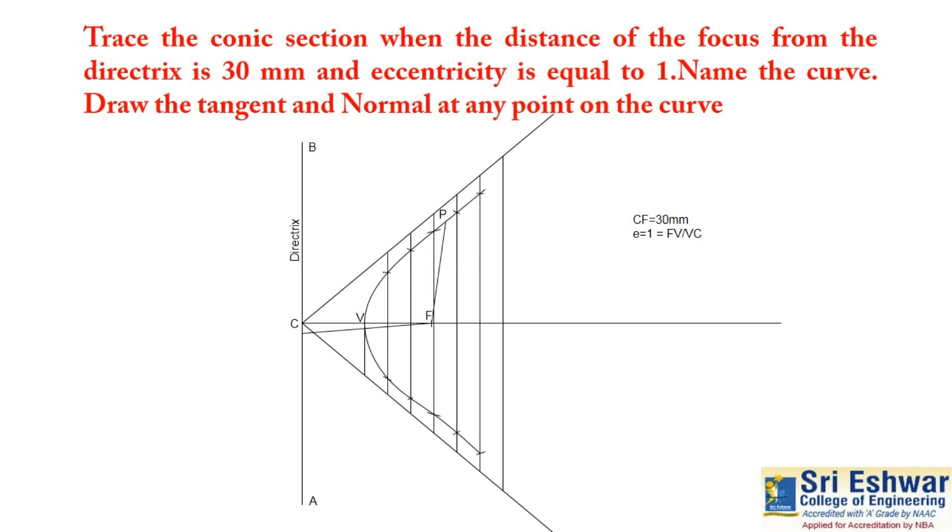We can get one intersection point at the directrix. Join this intersection point and P. This is the tangent. Draw a perpendicular line from P. This is normal. Name it as tangent and normal. This is the procedure to draw a parabola and draw the tangent and normal at any point P.